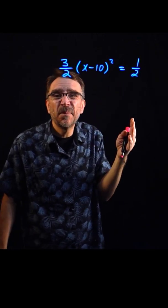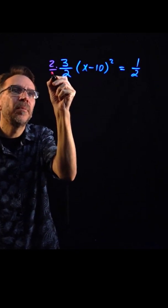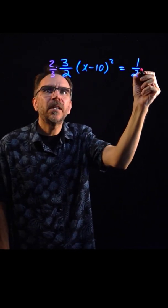Now I could just divide both sides by three halves, but let me show you a little bit of a trick here. I'm going to multiply both sides by the reciprocal here, two thirds.